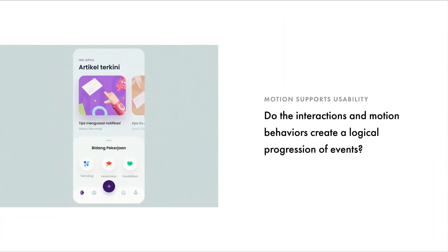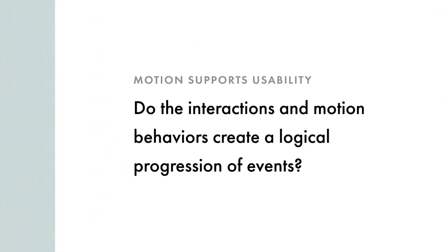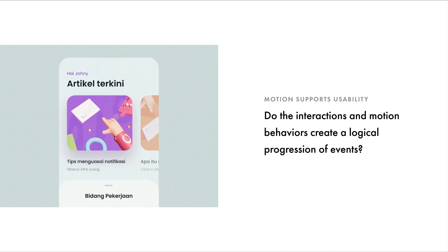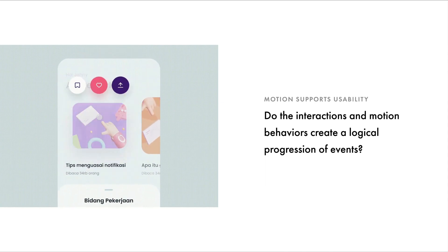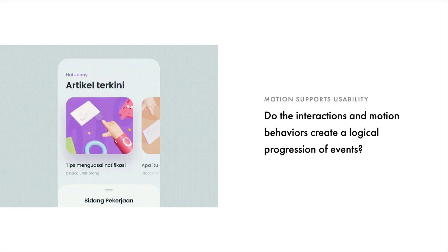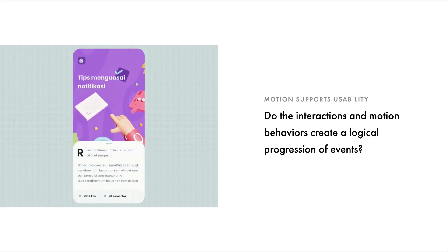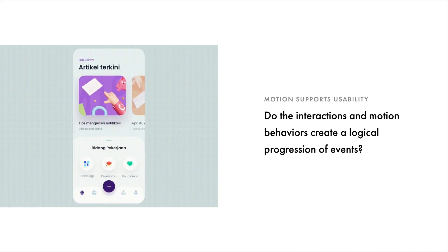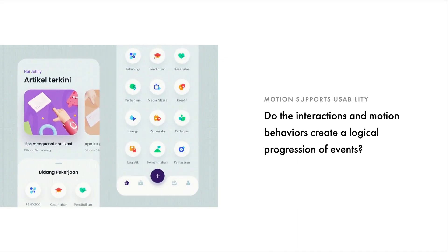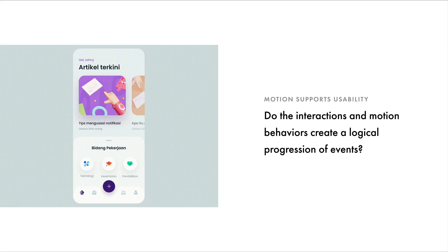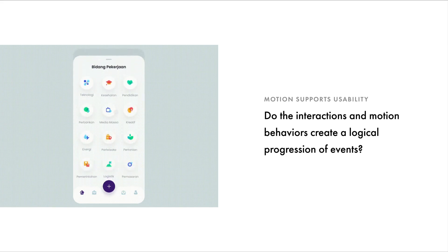Do the interactions and motion behaviors create a logical progression of events? Our interactions and the motion behaviors they trigger should tie to a progression of events that satisfies user intent. When a user is moving through an application, do all the different things happening seem logical? Do they seem rational? Do users actually expect those things to happen? When we design experiences, we need to make sure the moments and events we prototype and design connect together in a logical way throughout the entire user experience — you don't want random things popping up.